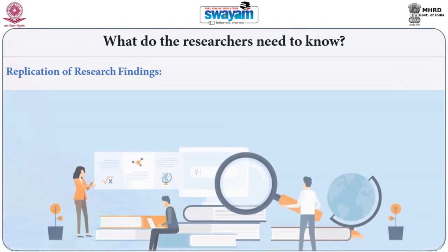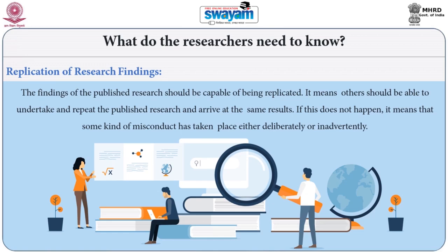To start the module, we will discuss what researchers need to know. First of all, they need to know about replication of research findings. The findings of published research should be capable of being replicated — others should be able to undertake and repeat the published research and arrive at the same results. If this does not happen, it means that some kind of misconduct has taken place, either deliberately or inadvertently.